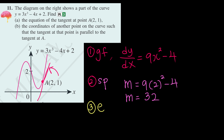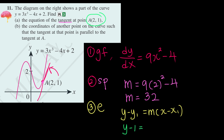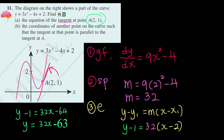Since tangent means the line has the same gradient as the curve at that point, the gradient is 32. We construct our equation using y minus y₁ equals m times (x minus x₁). Substituting point (2, 1): y minus 1 equals 32 times (x minus 2). Expanding: y minus 1 equals 32x minus 64, so y equals 32x minus 63. This is the equation of the tangent to the curve at point A (2, 1).